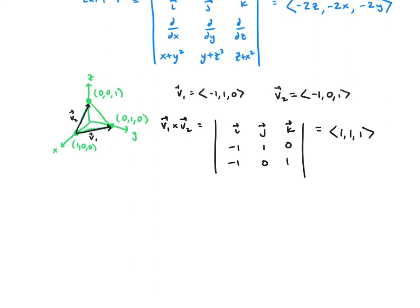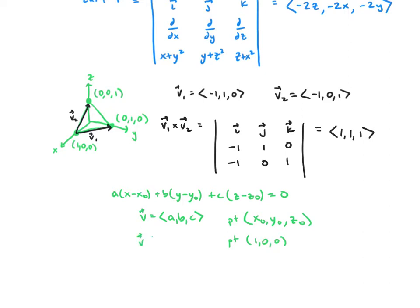As a quick review, the equation of a plane is: a(x - x₀) + b(y - y₀) + c(z - z₀) = 0, where the normal vector is (a, b, c) and the point is (x₀, y₀, z₀). We'll use the point (1, 0, 0) and our normal vector (1, 1, 1). Plugging in, we get 1·(x-1) + 1·(y-0) + 1·(z-0) = 0, and a cleaner form of that is z = 1 - x - y. This is our surface.